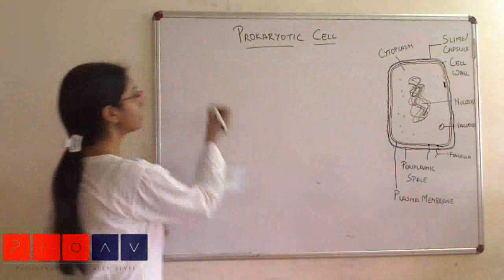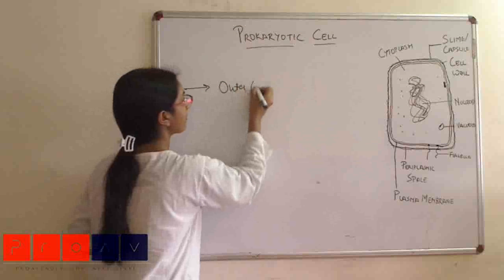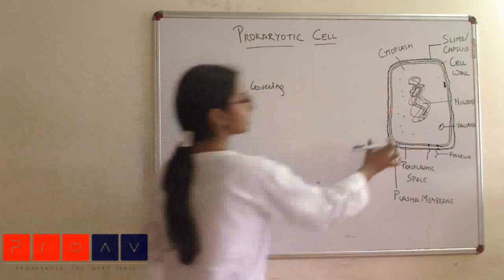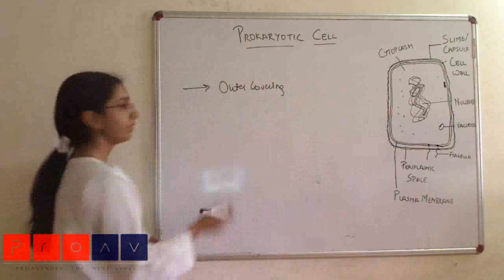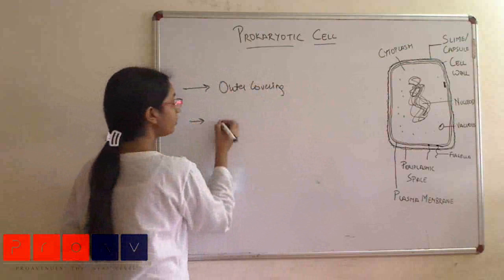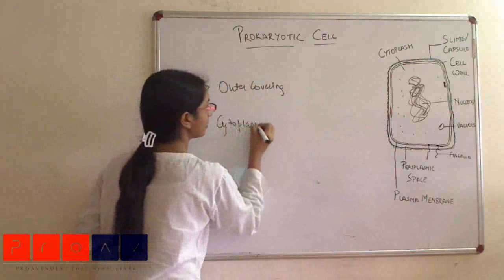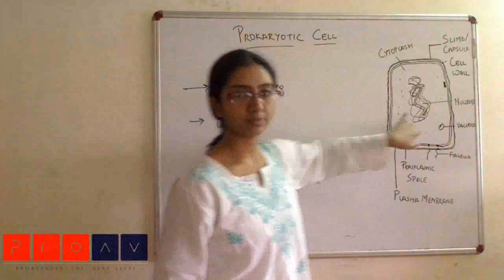What are the three basic things? The first is the outer covering. In this case, this entire portion would be the outer covering. Then you would have your cytoplasm. Everything inside this outer covering is cytoplasm.